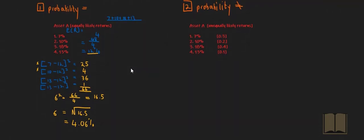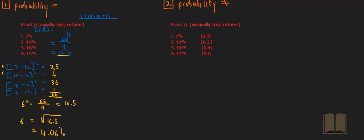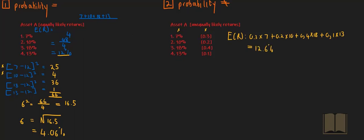Let's move over to the second scenario. It's exactly the same, with the only difference being that the returns are not equally likely to occur. We work out the expected return as follows: it's the probability of occurrence of each return multiplied by that associated return. So it's 0.2 multiplied by 7%, plus 0.2 multiplied by 10%, plus 0.4 multiplied by 18%, plus 0.1 multiplied by 13%. This gives us an expected return of 12.6%.